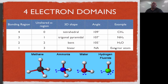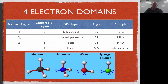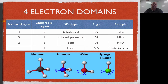Moving on to four electron domains, we have four different options: four bonding regions with zero unshared, three bonding regions with one unshared, two bonding regions with two unshared, or an exterior atom with one bonding region and multiple unshared electrons. These different options are shown in the slide.